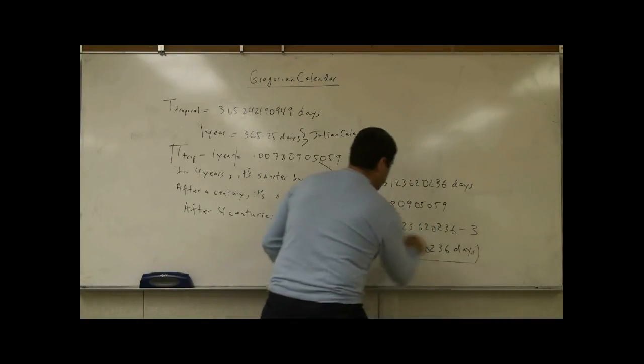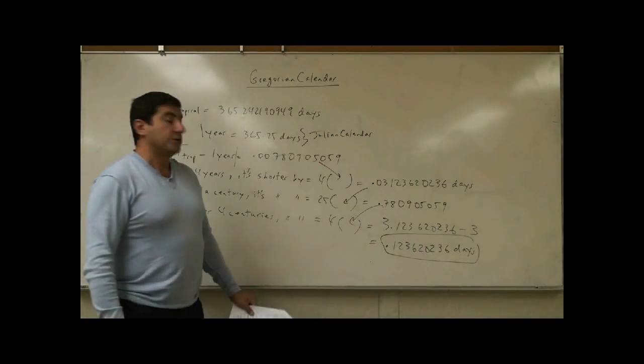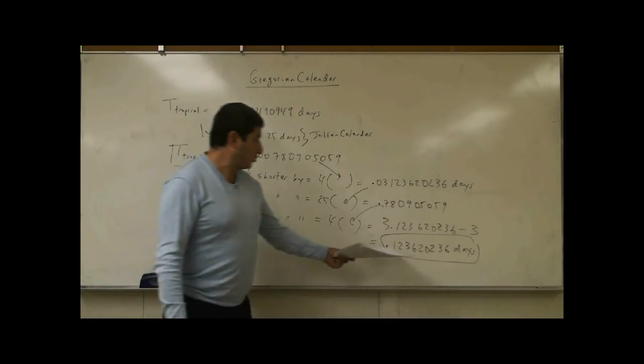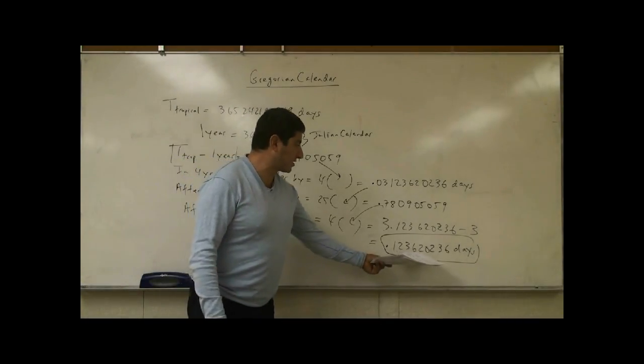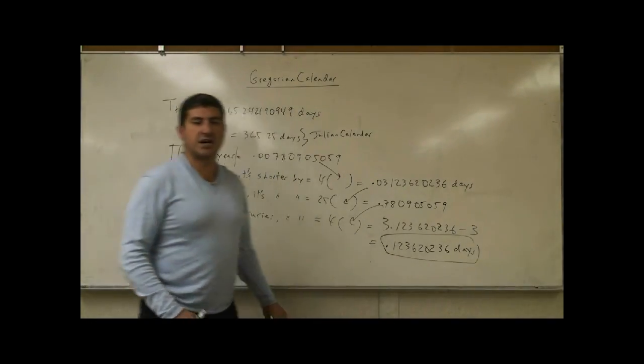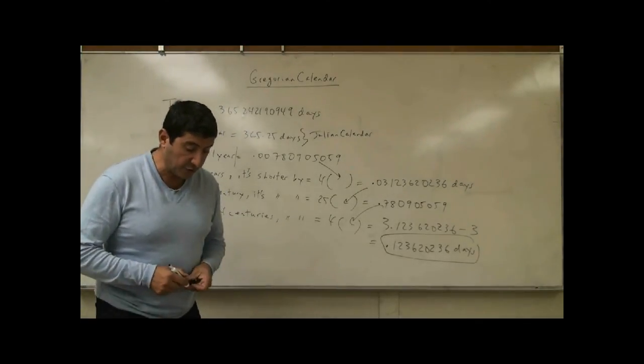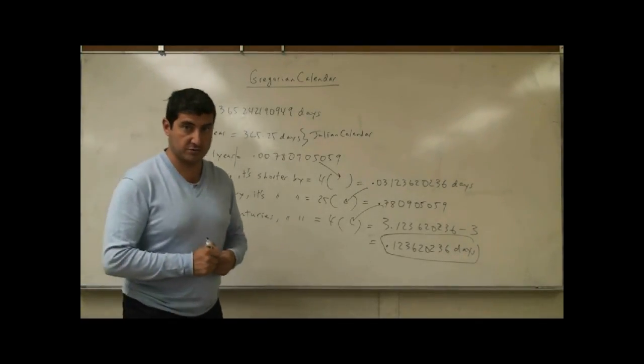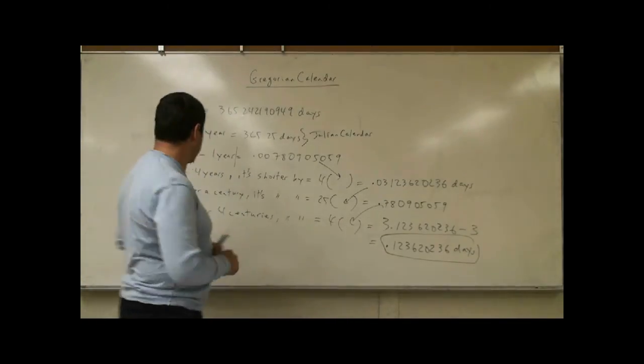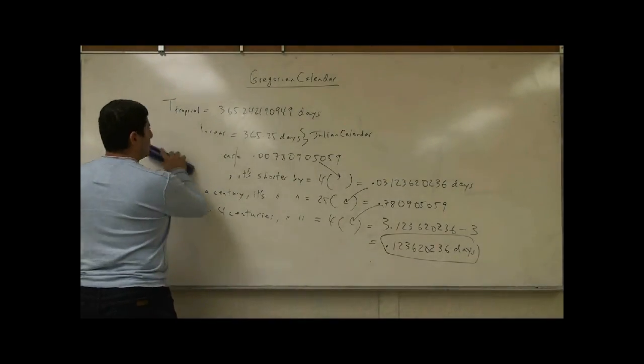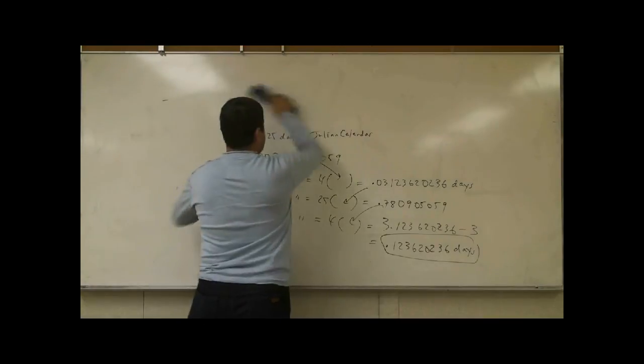So now you have 0.123620236 days. If you do that Gregorian correction, every 400 years, you'll only be 0.123620236 days off. Now, if you don't do that correction, if you don't do the Gregorian correction, what happens? Big problems happen.